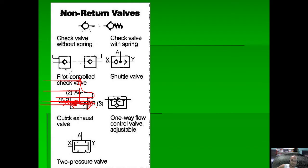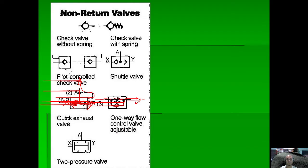The one-way flow control valve has restricted flow from left to right. If there is back-pressure on the right side, that pressure pushes the ball open, allowing free reverse flow. This one-way flow control valve is also adjustable. The two-pressure valve requires pressure on both inlet ports simultaneously before flow passes to port A.